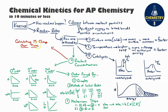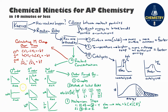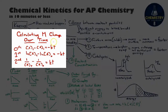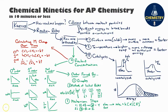Finally, integrated rate laws allow us to calculate exact molarity changes over time. There are three equations — one for each reaction order: zeroth, first, and second — all provided on the AP equation sheet. While they look different, they share the same basic pieces: the concentration at some time, the initial concentration, the rate constant k from the rate law, and time itself. That wraps it up for chemical kinetics for AP Chemistry in about 10 minutes.